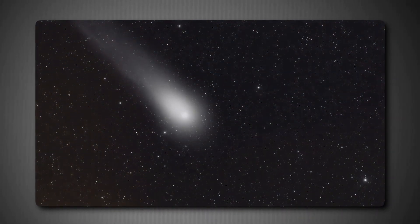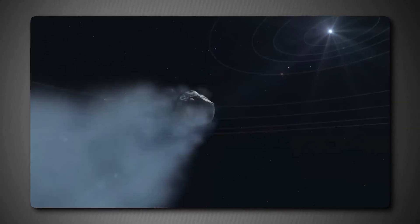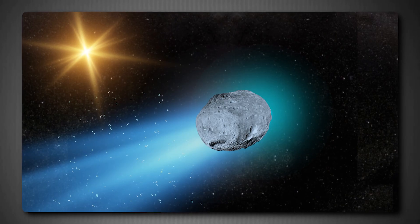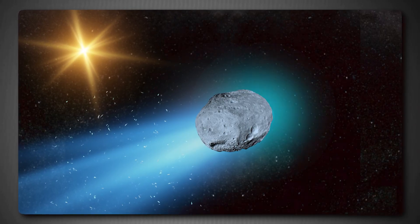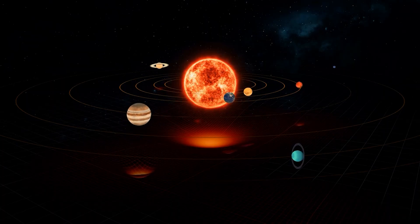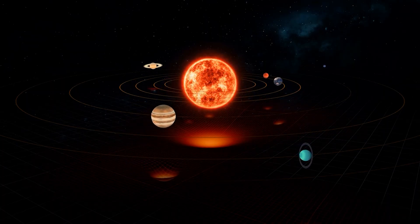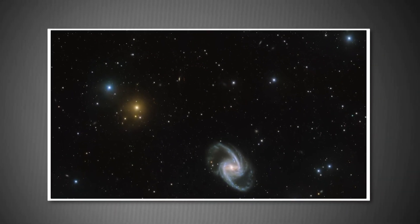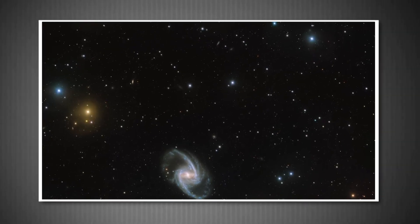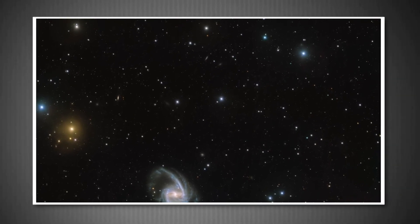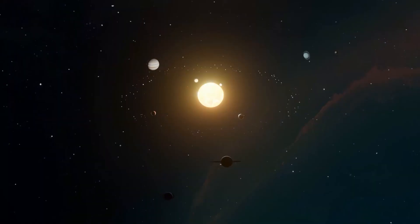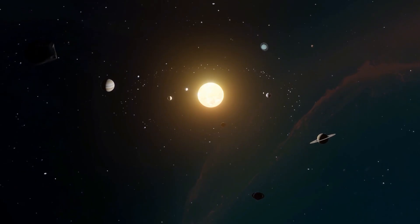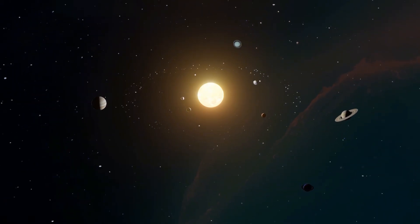If Loeb is right, and 3I ATLAS is indeed a 20 kilometer rock, then we have a serious problem. The reservoir of rocky material in interstellar space shouldn't be able to deliver such a large object to our solar system. Such objects should only arrive once every 10,000 years or so. This has led to speculation about whether 3I ATLAS is truly natural. Though NASA's lead scientist for solar system small bodies, Tom Statler, has firmly stated that the evidence is overwhelmingly pointing to this object being a natural body.